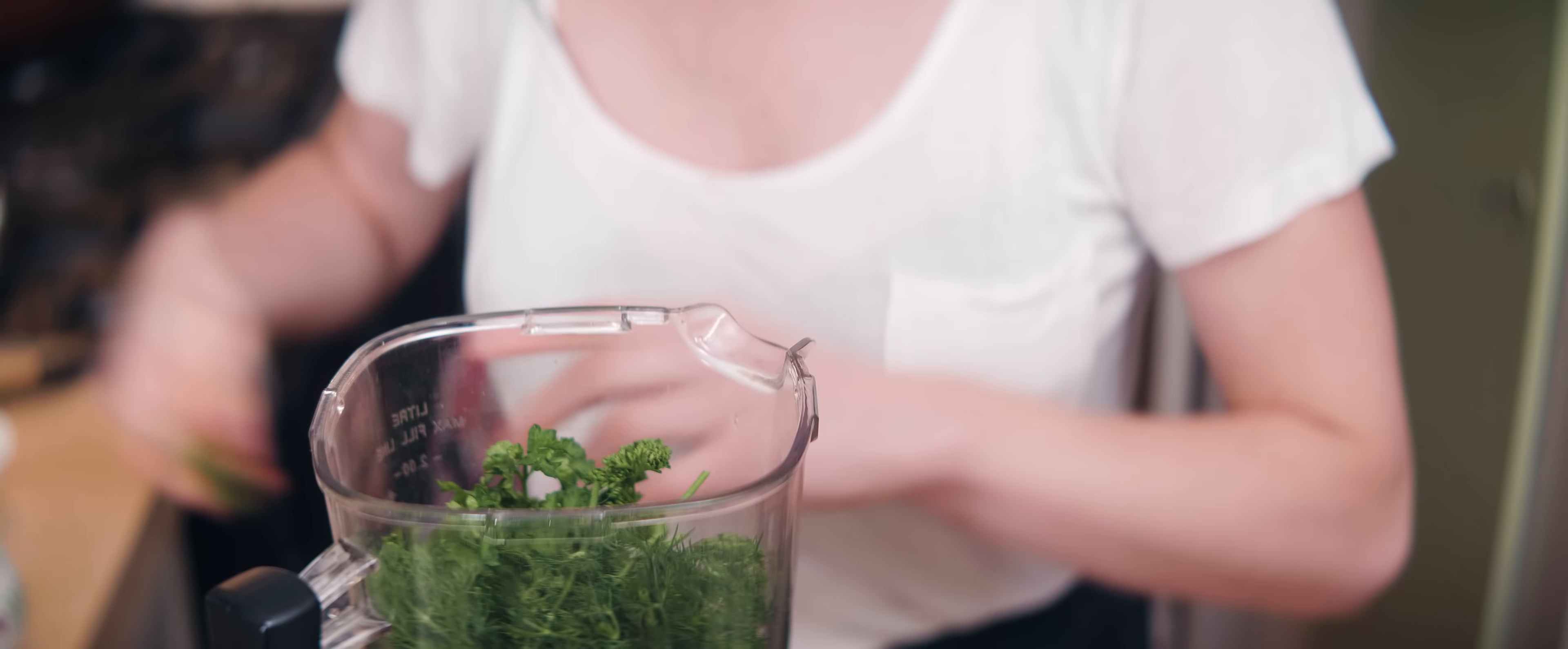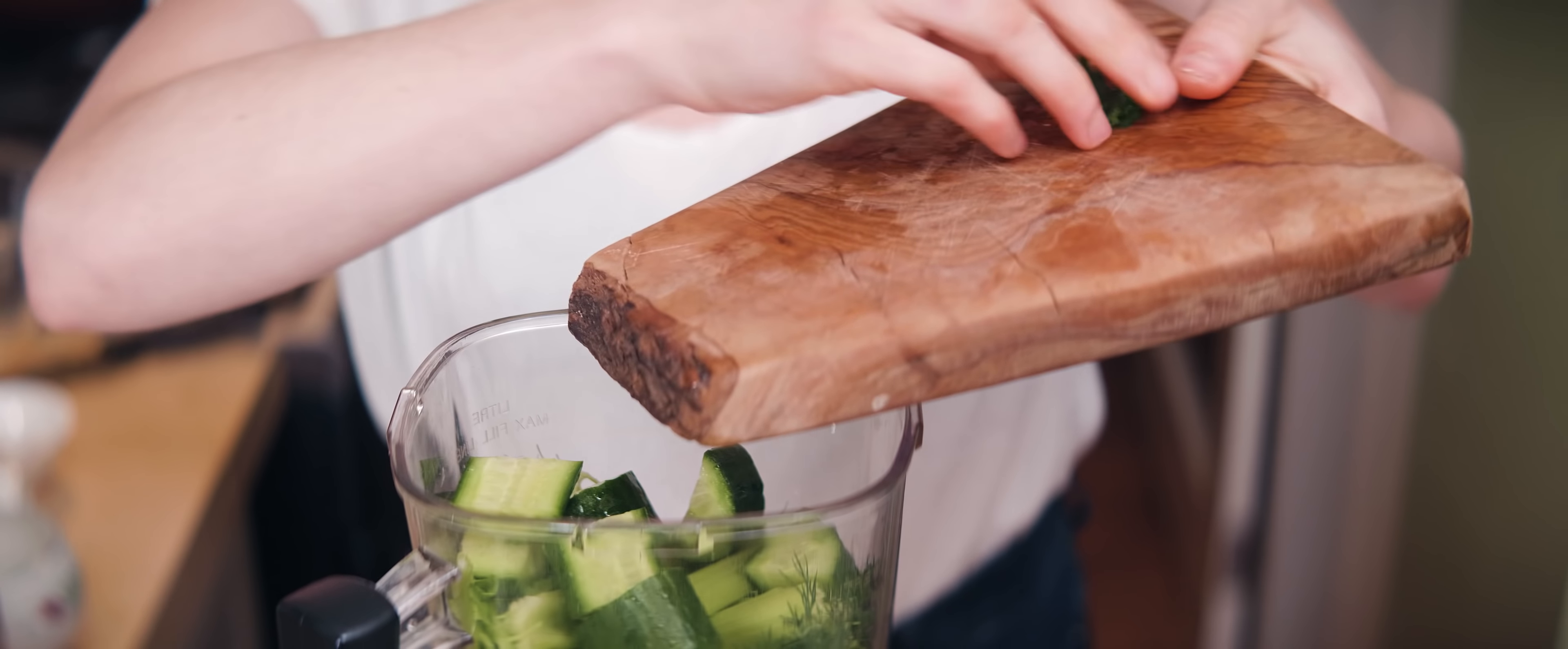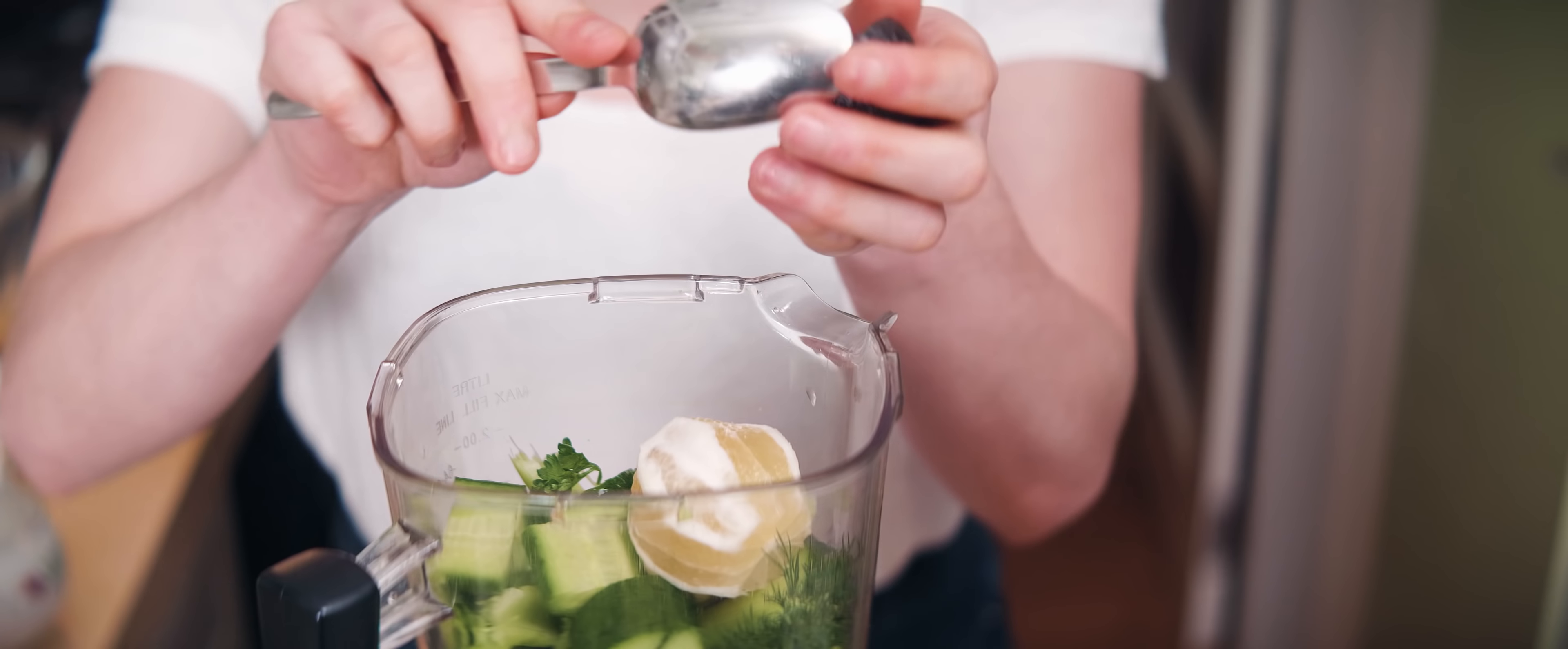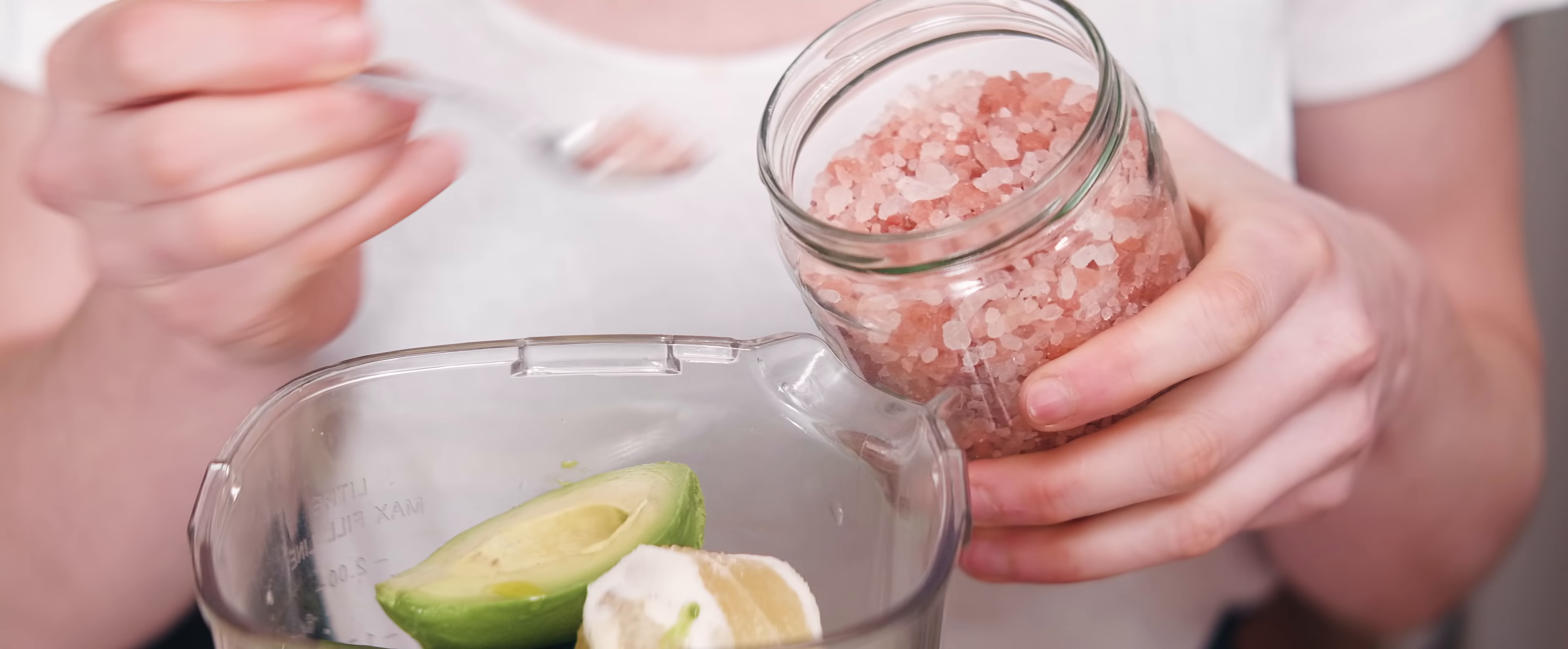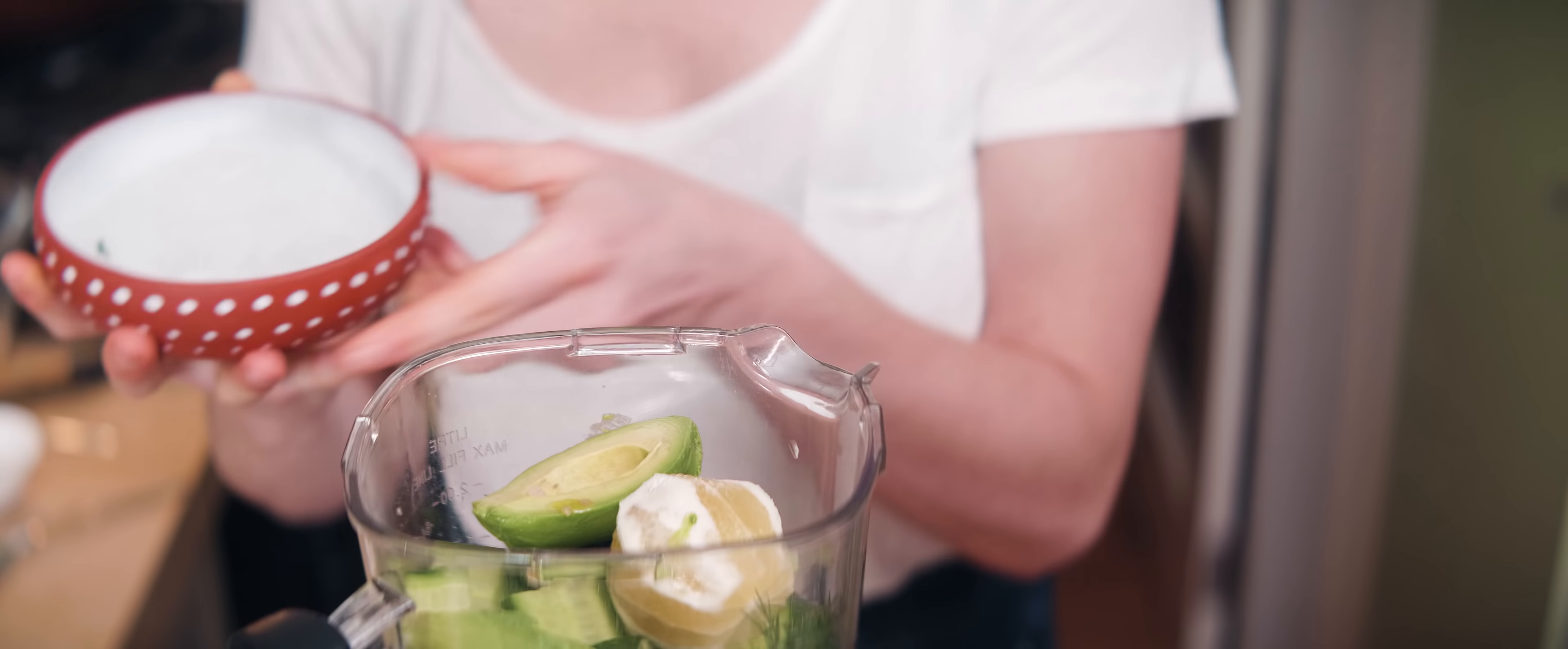Then some celery, three sticks, half a cucumber, a really small clove of garlic, half a lemon but I'm going to use a whole lemon, I like it sour. Then a whole avocado and a splash of olive oil.